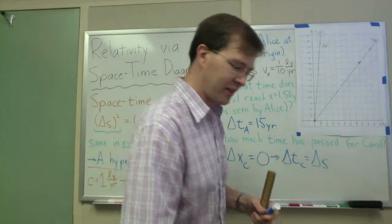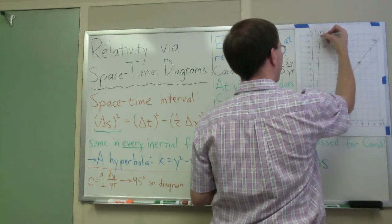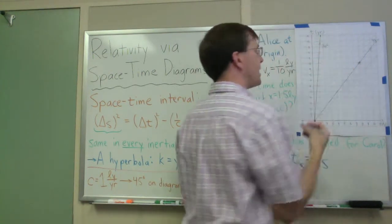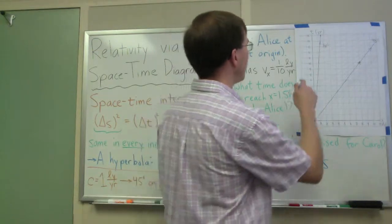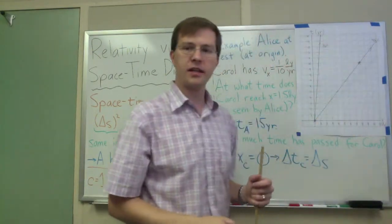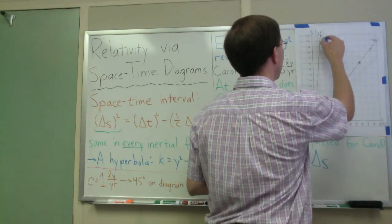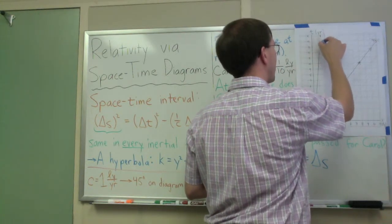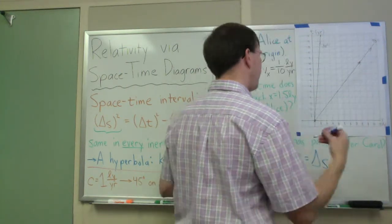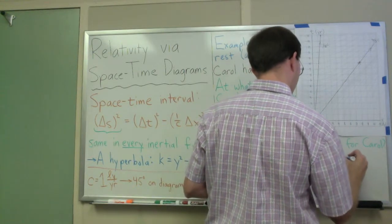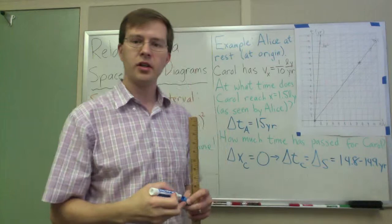All I have to do is read the space-time interval off of this graph. Space-time interval of what? Well, of the event where Carol reaches 1.5x right here. That is the event I care about. Let's see what we've got. If I look at it carefully, it's between 14 and 15 - between the 15 hyperbola and the 14 hyperbola. If I try to eyeball it, going on a straight line between the two, that's halfway, three quarters... I might say 14.85, or 14.8 to 14.9 years.